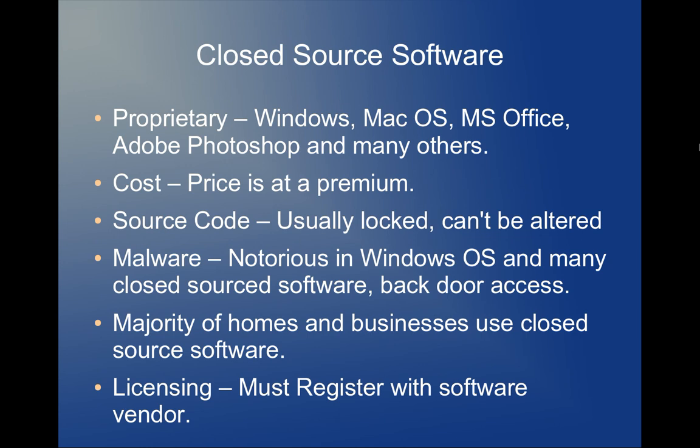I'd like to start off with this presentation by looking at closed source software. Most of the software that we use, like Windows and Mac OS, that are used in many houses, businesses, and industries, are proprietary. An example of proprietary software is Mac hardware — they have hardware designed specifically to run the Mac OS X system. It's based off of an Intel processor and chipset, so you can also run Windows on it using Bootcamp. But Mac is proprietary to Mac OS. Same thing with Windows — it's proprietary to PCs.